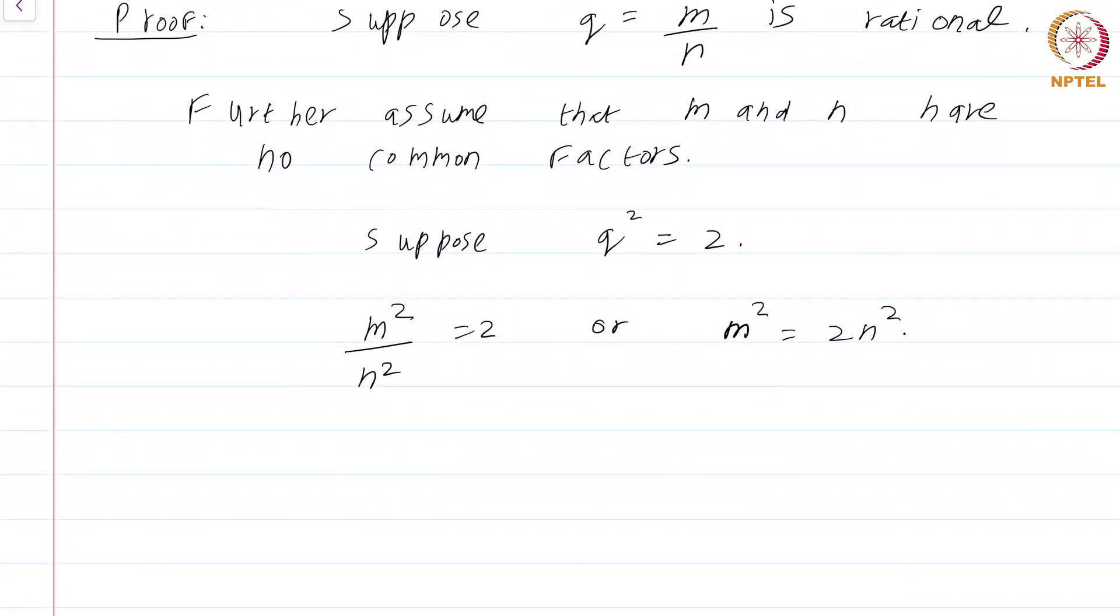Now, what does m² = 2n² tell us? It tells us that 2 divides m². This vertical line just means divides. Because the right hand side is 2n², 2 must divide the left hand side which is m².